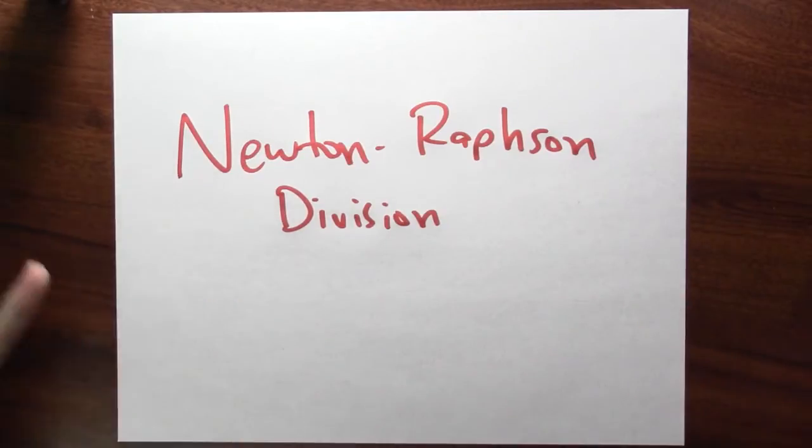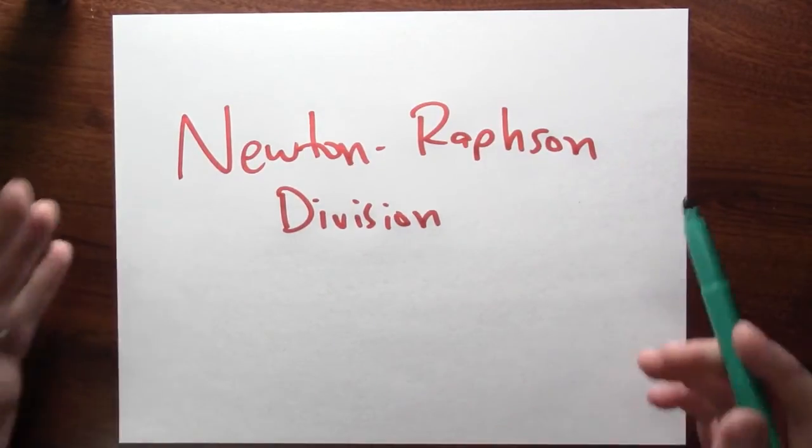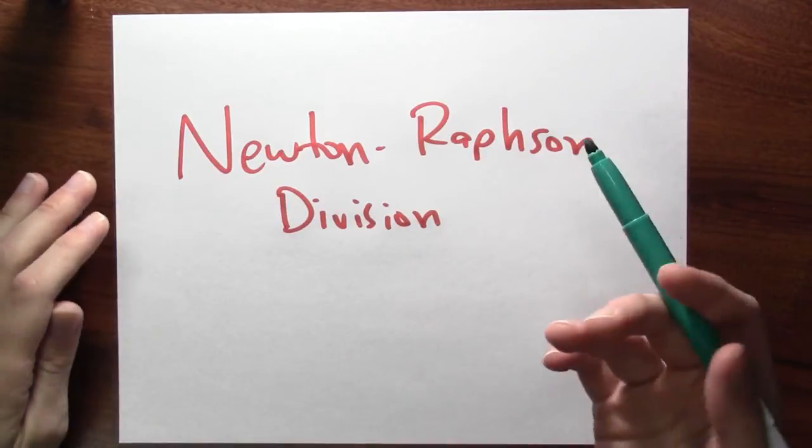This method has a name. So this technique usually goes by the name Newton-Raphson Division. And we just saw that it works for finding reciprocals.